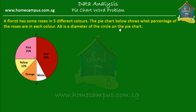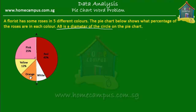AB is a diameter of the circle on the pie chart. When we say that AB is a diameter of the circle, this diameter AB divides the circle into two halves. So this is one half of the pie and this is the other half. So in the case of this pie chart, 50% of the roses were red or white, and the other 50% were either pink or yellow or orange.